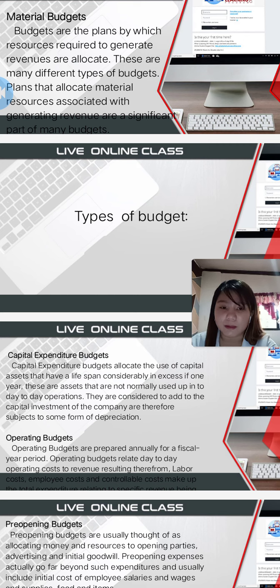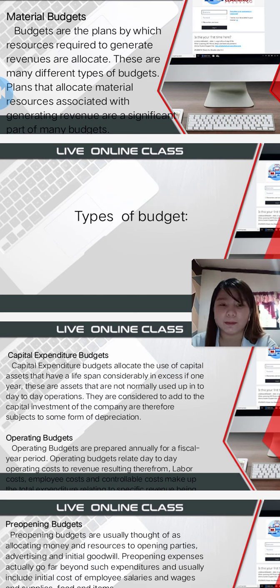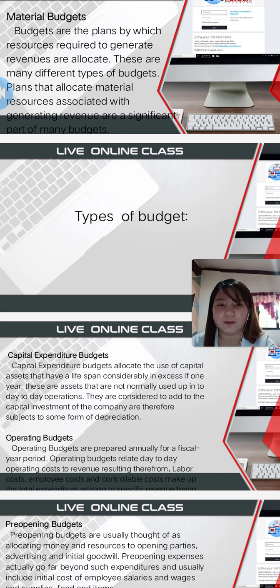Examples of capital expenditures include buildings, including subsequent costs that extend the useful life of a building, computer equipment, office equipment, and intangible assets.